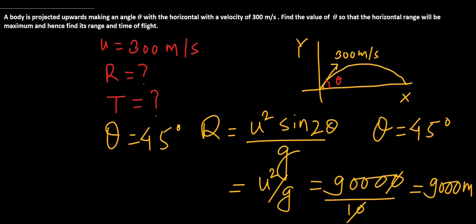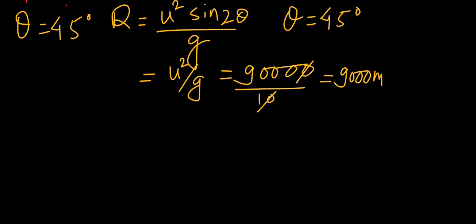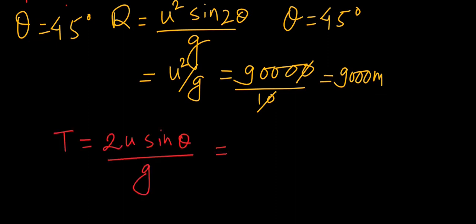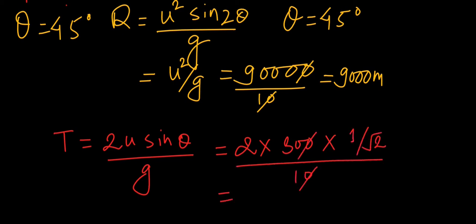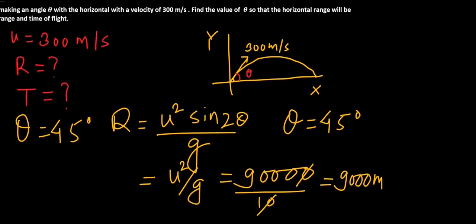Now we have to find the time of flight as well. The relation for time of flight is T = 2u sinθ / g. Here u = 300 and θ = 45°, so sin45° = 1/√2 and g = 10. This gives us a time of flight of 42.42 seconds. So for a projection angle of 45°, the body covers a horizontal distance of 9000 meter in 42.42 seconds.